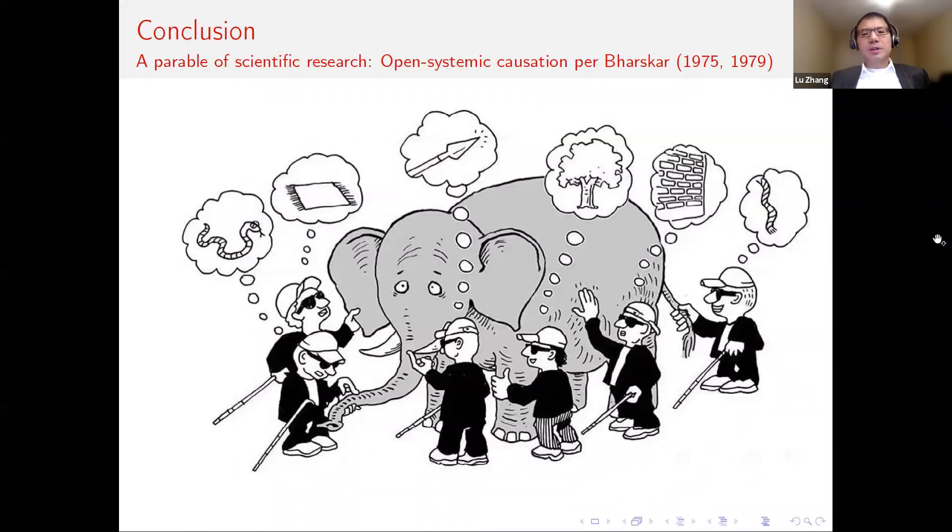Let me conclude with this old Indian parable about the six blind men and the elephant. The elephant represents the mind-independent reality we call capital markets. The six blind men represent all the men and women who are trying to understand the mind-independent reality from our own unique standpoint. This is a concept I learned about open system causation from Roy Bhaskar's critical realism philosophy of science.